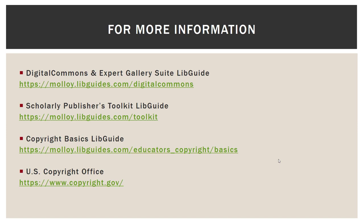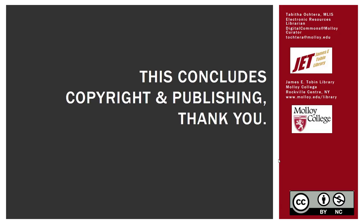If you're looking for more information about this or about sharing your work online, you can visit the Digital Commons and Expert Gallery Suite LibGuide. You can also go to the Scholarly Publishers Toolkit LibGuide. We do have a Copyright Basics LibGuide, or if you want to know more specifically about copyright, you can go to the US Copyright Office's website at copyright.gov. This concludes Copyright and Publishing Part 1, Traditional Publishing. Thank you.